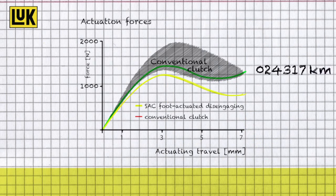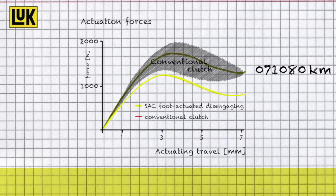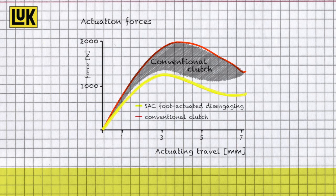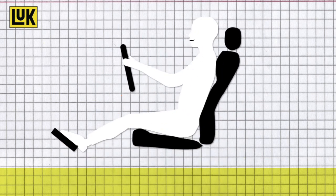A ramped ring compensates for the lining reduction under the pressure plate and helps maintain the clutch geometry over its service life. The actuation force now no longer increases and the comfort of easy pedal use is retained, equal to a brand new clutch.